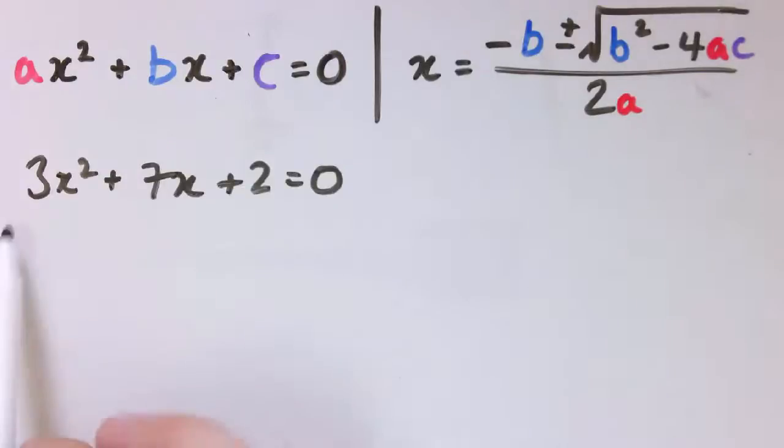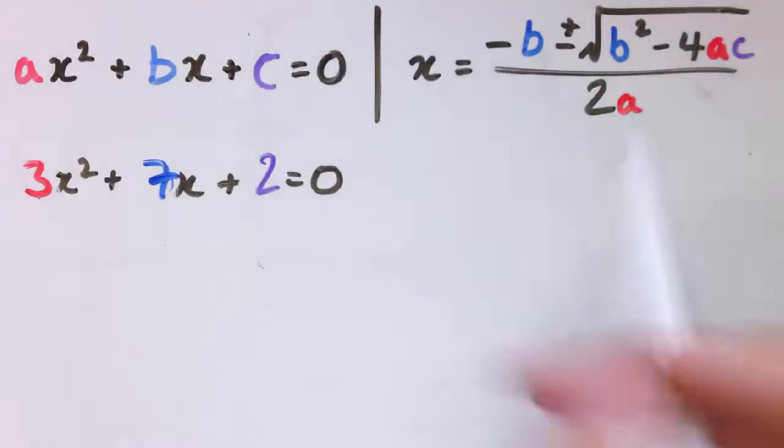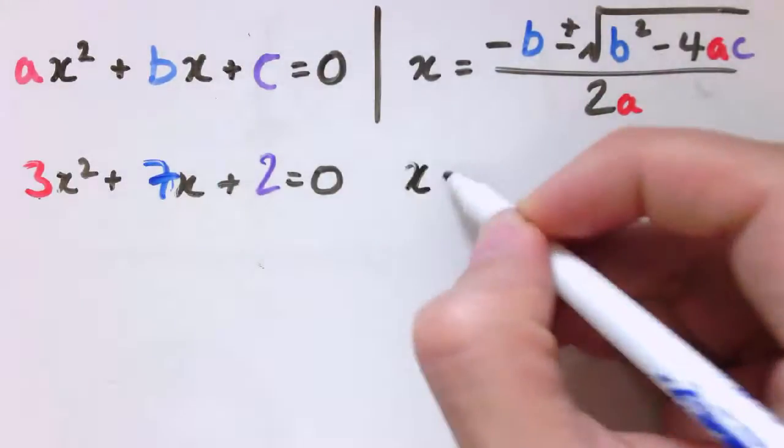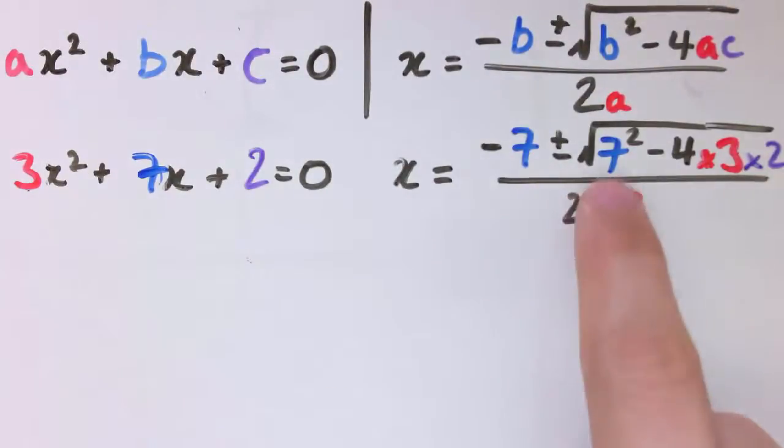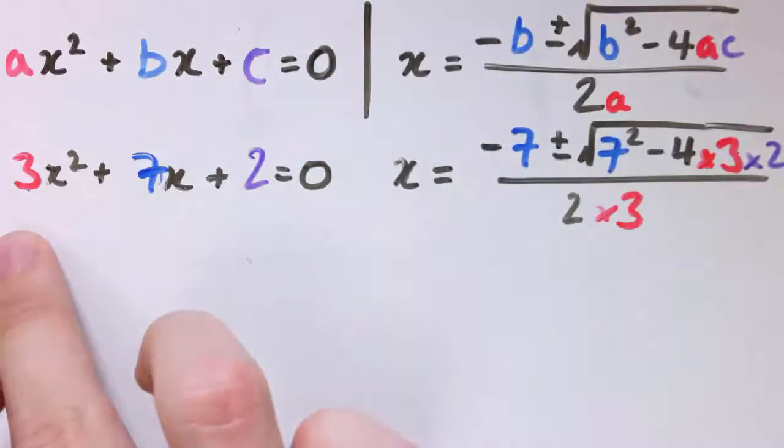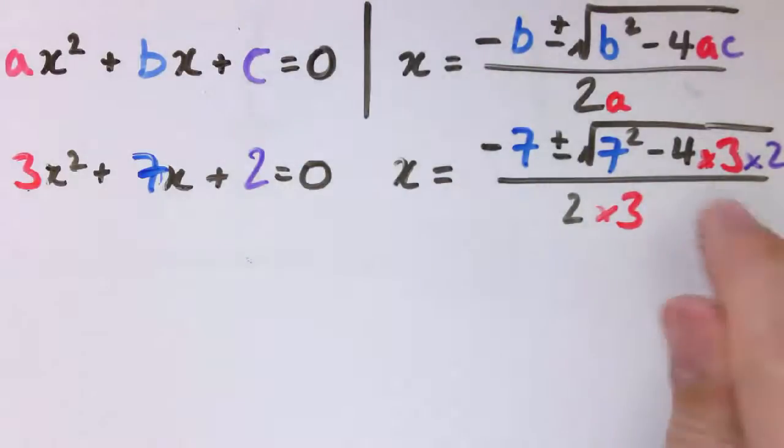I want to solve 3x squared plus 7x plus 2. We've got a is 3, b is 7, and c is 2, and it's exactly in this form. So the answer is x is minus 7 plus or minus the square root of 7 squared minus 4 times 3 times 2, all divided by 2 times 3. So I've already just replaced these numbers with these numbers.